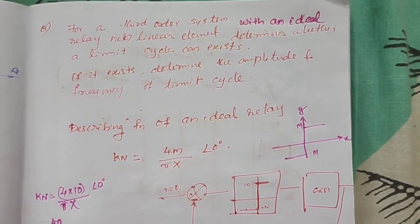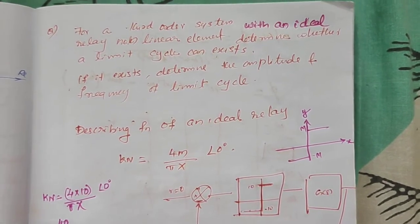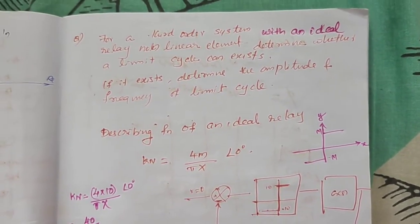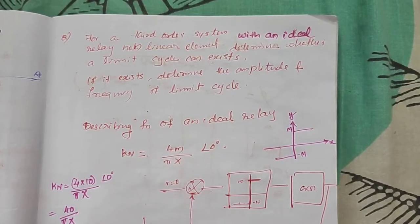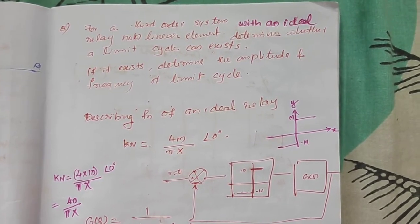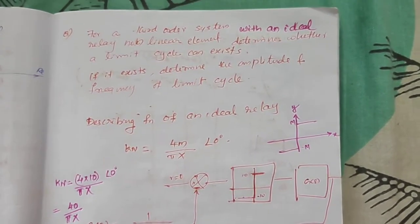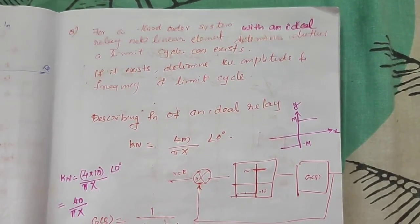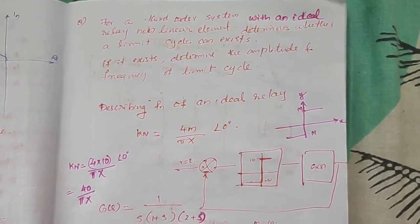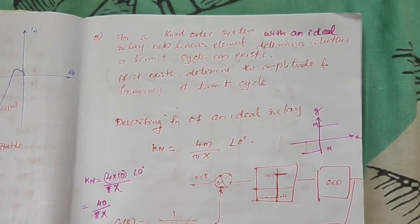Welcome back to our advanced control theory lectures. We are continuing with the describing function problem. The problem is: for a third-order system with an ideal relay nonlinear element, determine whether a limit cycle exists or not. If it exists, determine the amplitude and frequency of the limit cycle.